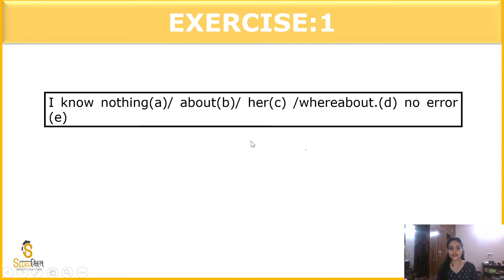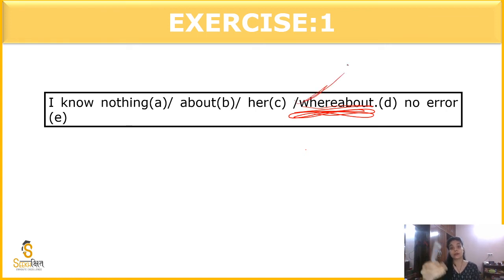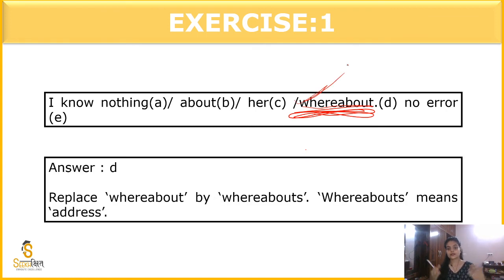The next question: 'I know nothing about how whereabouts.' What is whereabout? Whereabout means thikana — where someone goes and comes. The error is 'whereabout' — it is always 'whereabouts.' Replace whereabout with whereabouts. Whereabouts means address, thikana.